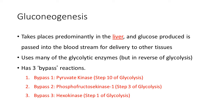Bypass 1 acts to reverse the action of pyruvate kinase, which is step 10 of glycolysis. Bypass 2 reverses the action of phosphofructokinase 1, which is step 3 of glycolysis. And lastly, bypass 3 reverses hexokinase, which is step 1 of glycolysis.